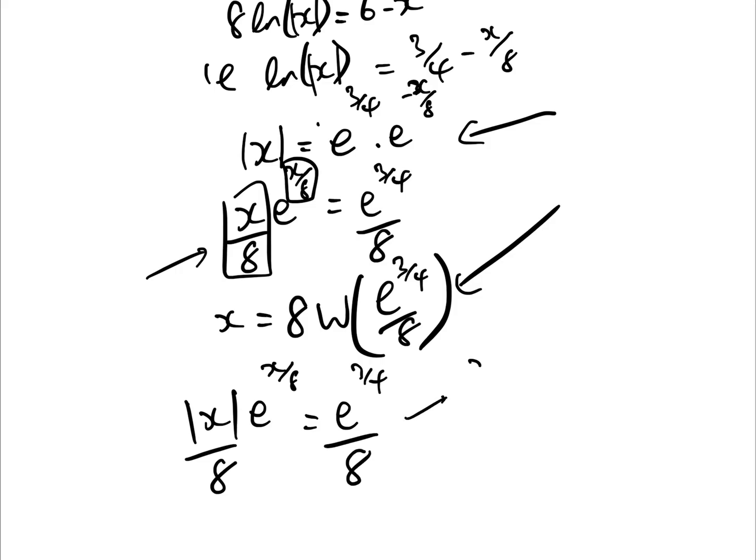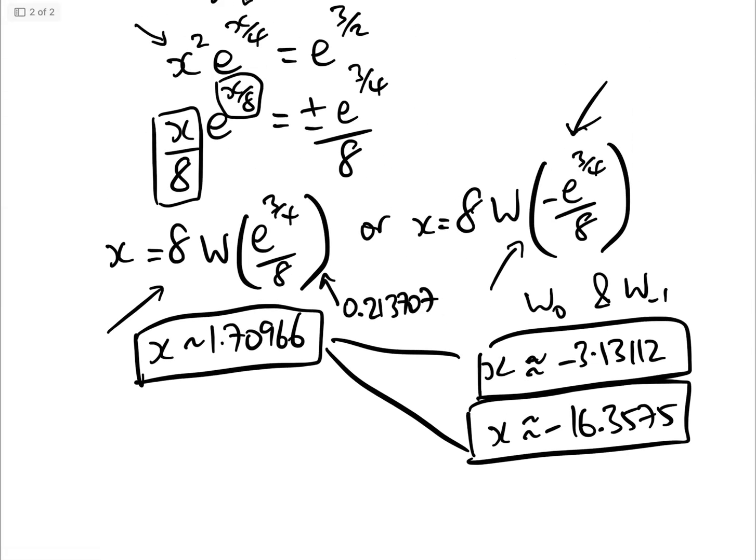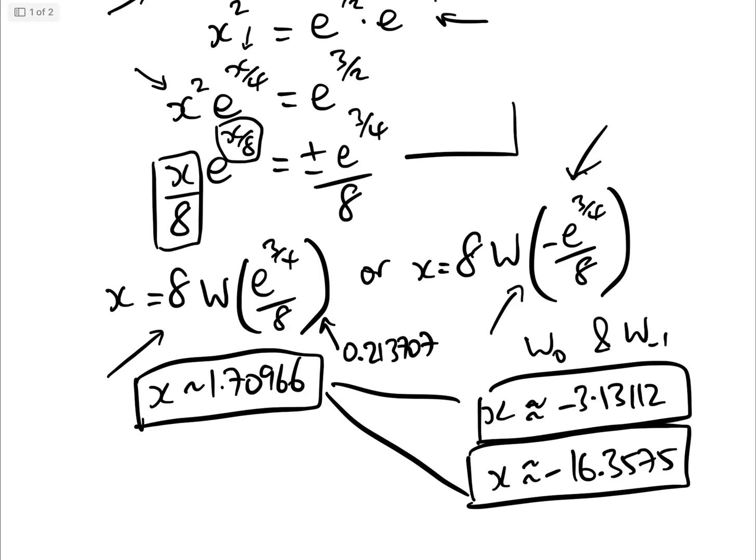And from that, we either say, x over 8 e to the x over 8 equals plus e to the 3 quarters over 8, or x over 8 e to the x over 8 equals minus e to the 3 quarters over 8. And then we're back exactly where we were up here. And we get our three solutions.